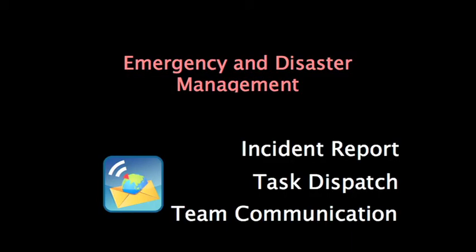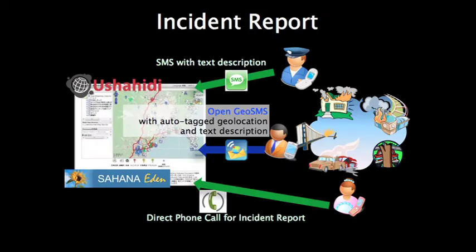We're thinking about using OpenGeoSMS for disaster management with three major features. The first is instant reporting, like in this figure. With Ushahidi, you can report status through short messaging, and with OpenGeoSMS you can further locate the X and Y and send it back to the server along with the geo-tag. That helps with automatic data processing and more accurate location spotting.